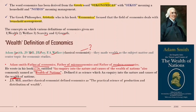J.S. Mill was another classical economist who defined economics as the practical science of production and distribution of wealth — again focusing on production and distribution of wealth. This was the wealth definition.